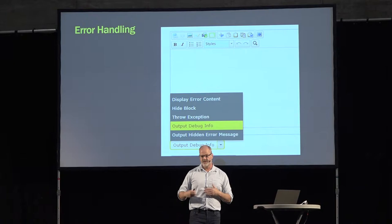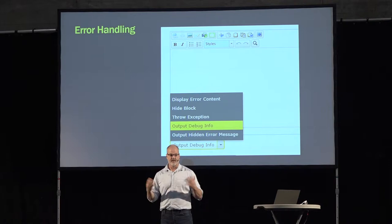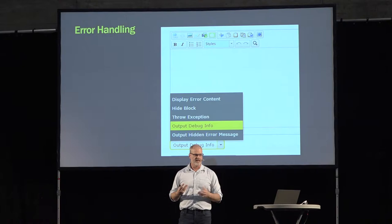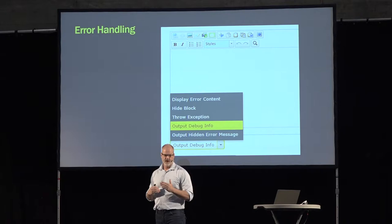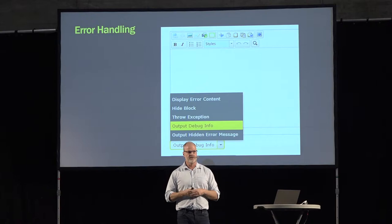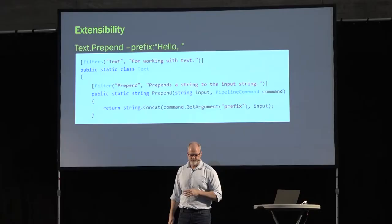There's some error handling — if the script throws an error, you can display error content, hide it and pretend nothing happened, throw an exception (only in a development environment), output detailed debug info, or output a hidden error message as an HTML comment so nobody can see it but you can check what happened. We can also cache — if cache is zero, the script runs every time; if you set cache to 60 minutes, the script caches its result and won't rerun for 60 minutes. The cache key is a hash of the entire command set.